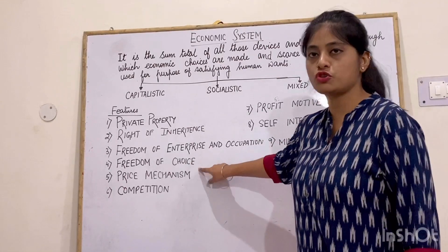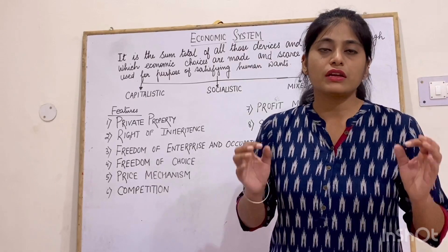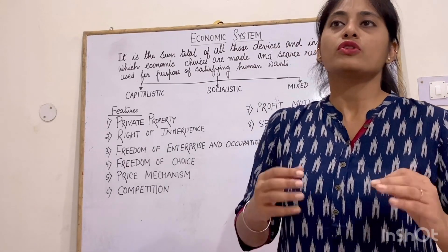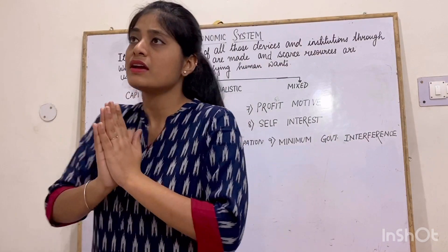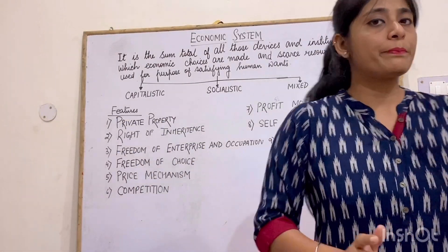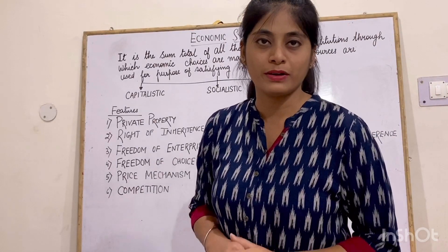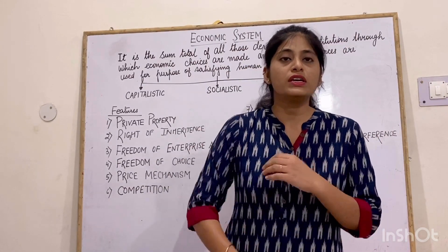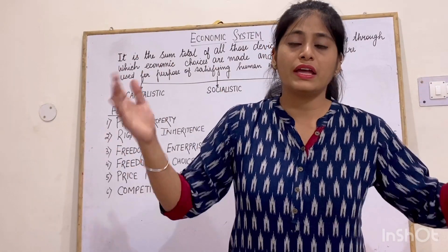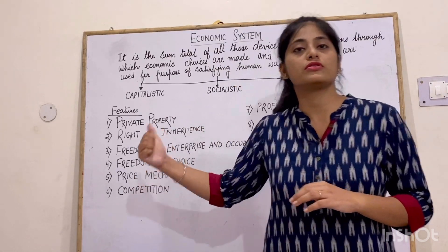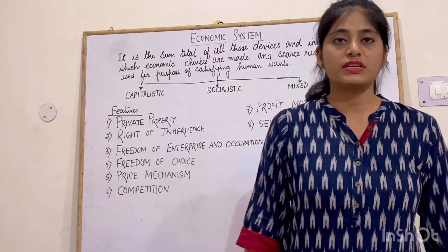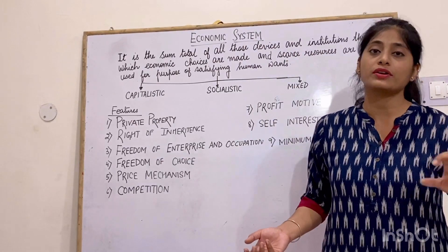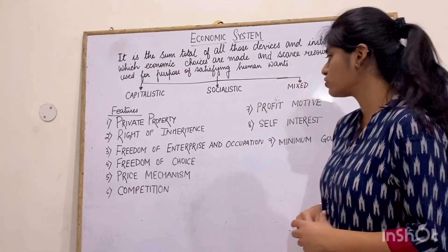Next is freedom of choice. In this capitalist economy, consumers are the kings of the market. The producers produce goods and services according to the demand of the consumer, because if they produce those goods and services, their income will be high and they will earn more profit. Consumers are free to choose whatever goods and services they like; they are not bound to acquire those goods and services which they do not like.